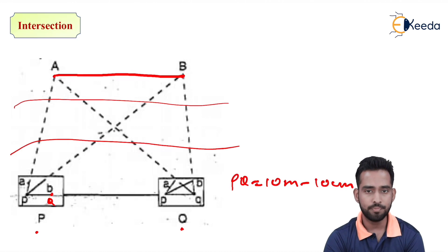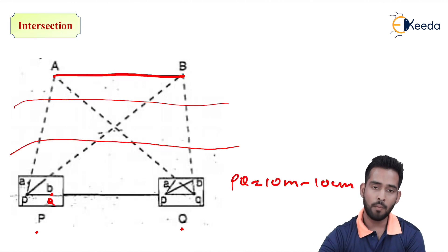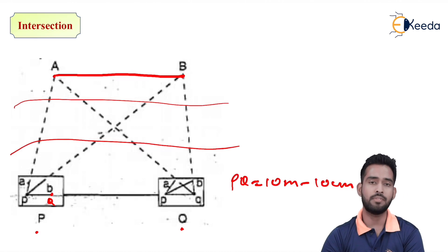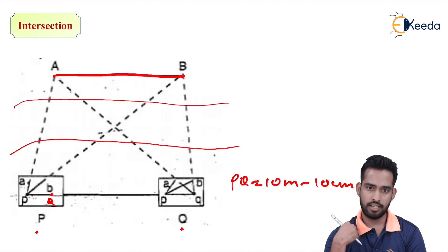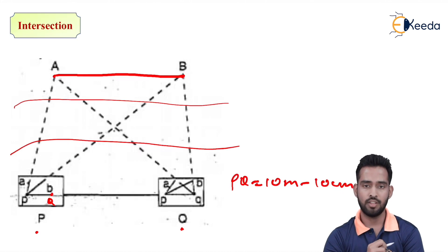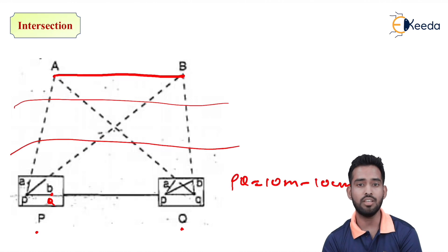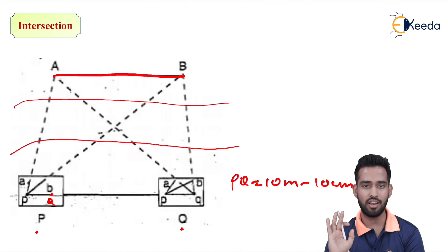After drawing rays PA and PB from P, shift your instrument to station Q. As we already have station Q marked on the sheet, we match the point on the sheet with the point on the ground using the U-Frame — that is known as centering. After proper centering, do all the temporary adjustments required.